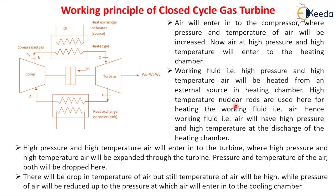High temperature nuclear rods can be used for heating the working fluid. The air will have high pressure and high temperature at the discharge of the heating chamber. This heat addition occurs at constant pressure, so at the exit of the heat exchanger temperature will be higher. Now, high pressure and high temperature air enters the turbine and is expanded through it. Pressure and temperature of the air both drop during expansion.